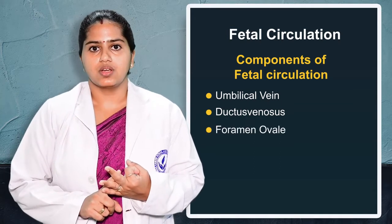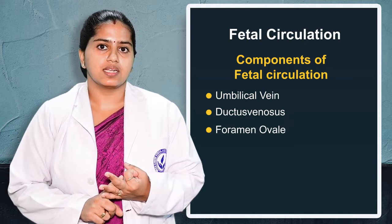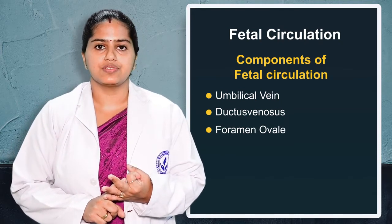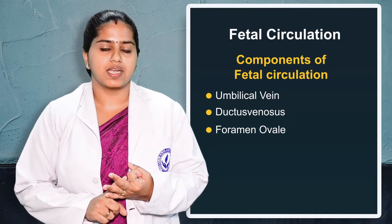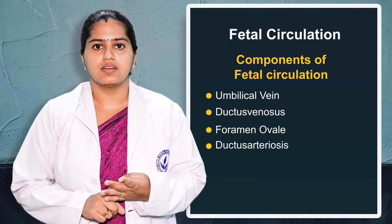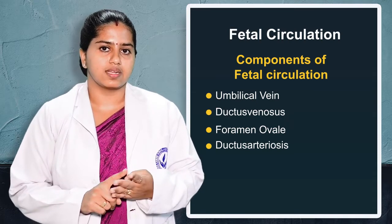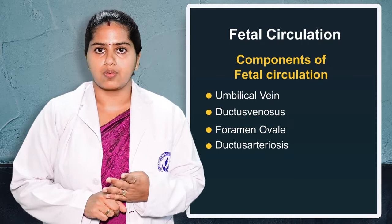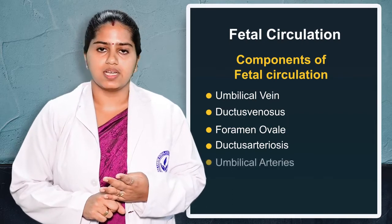Third is the foramen ovale, which is a shunt formed between the right atrium and the left atrium — here mixing of oxygenated blood takes place. Fourth is the ductus arteriosus, which is a connection between two arteries: the pulmonary artery and the descending aorta. Here also mixing of blood takes place.